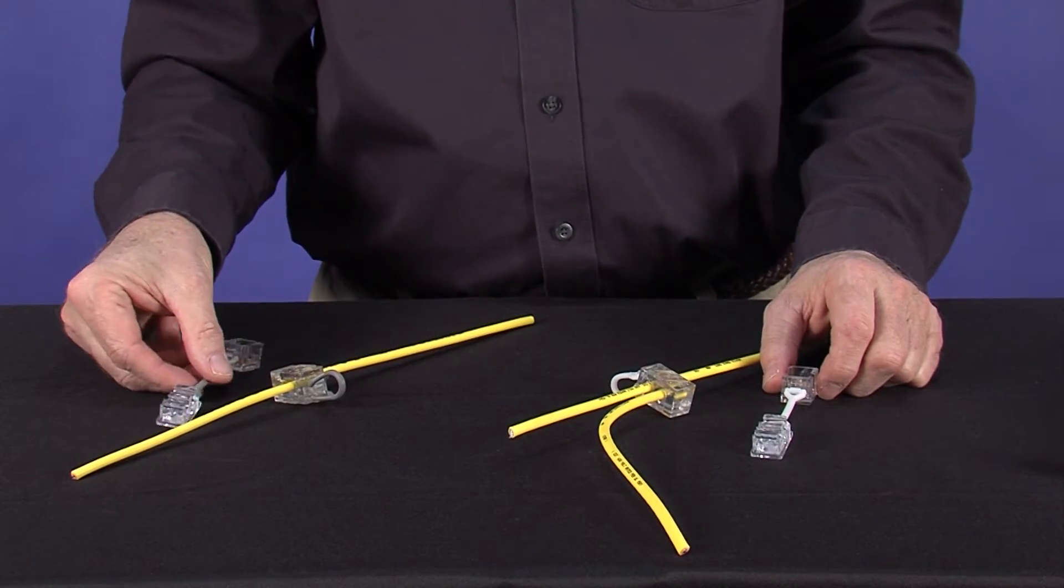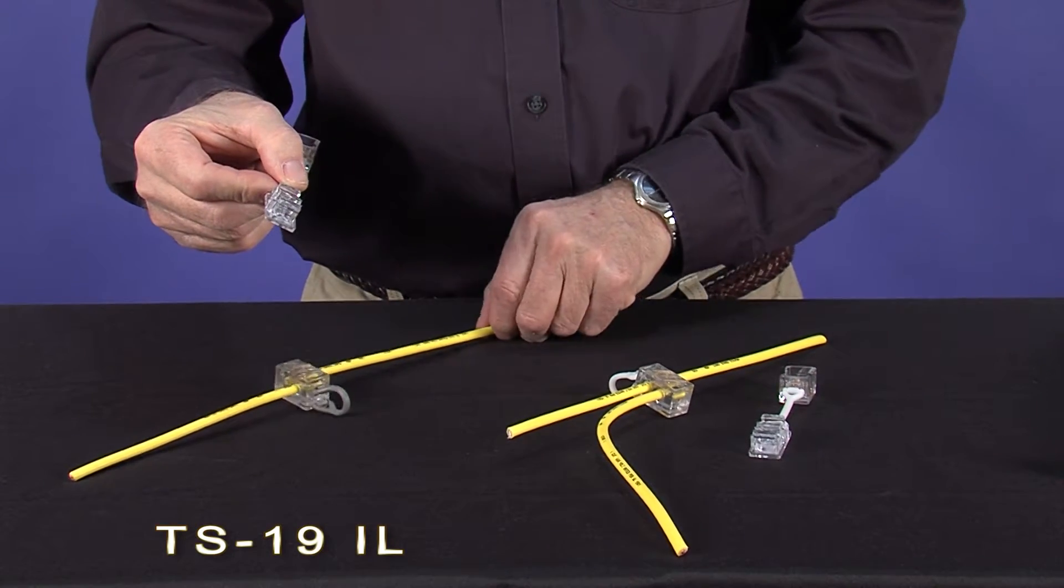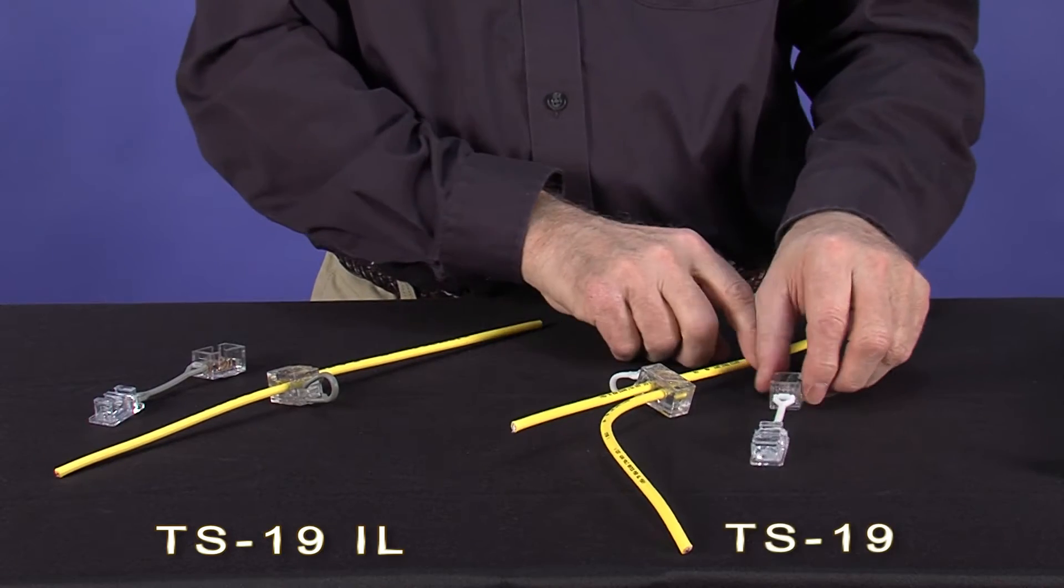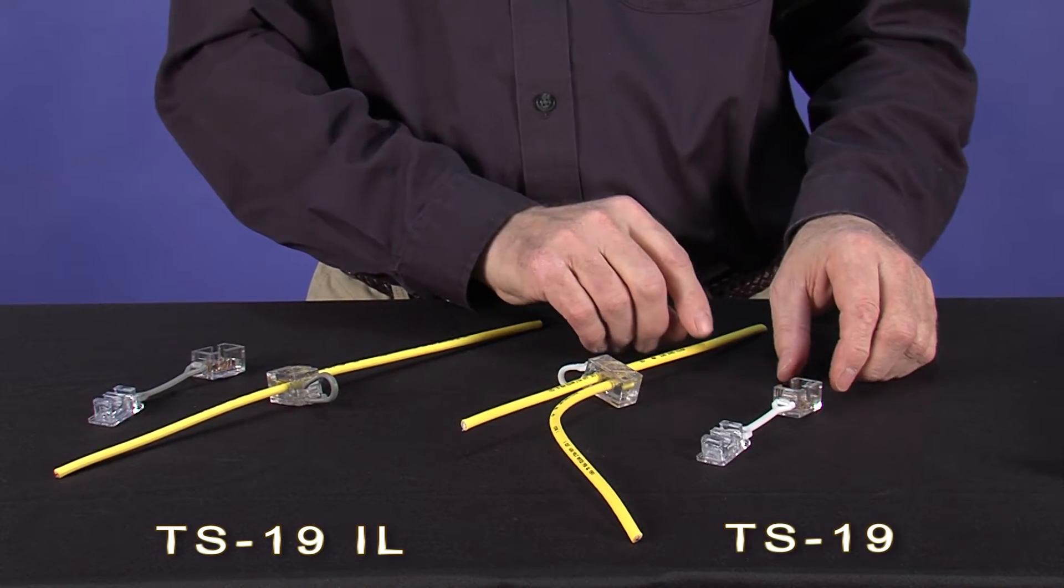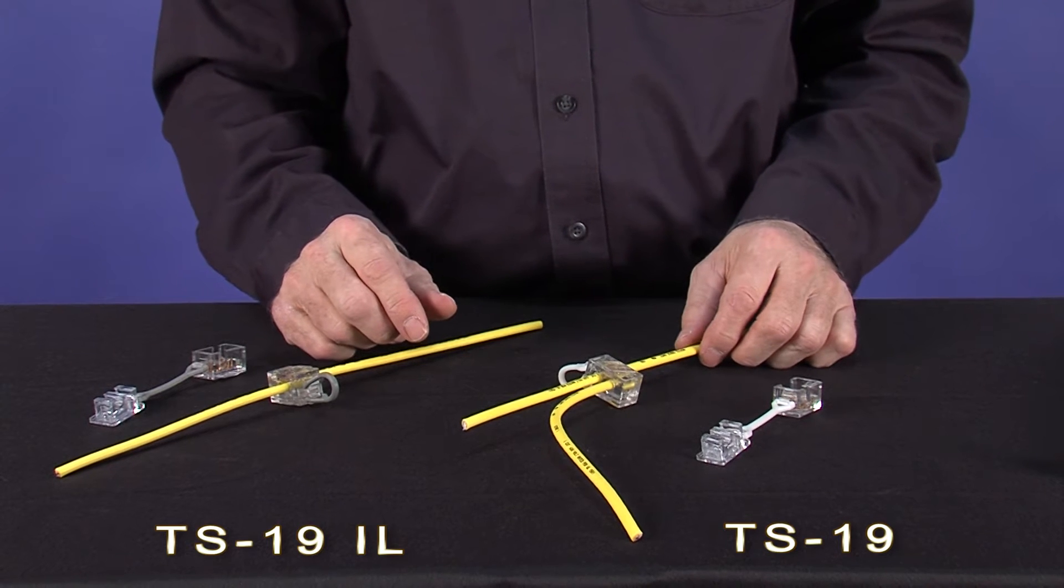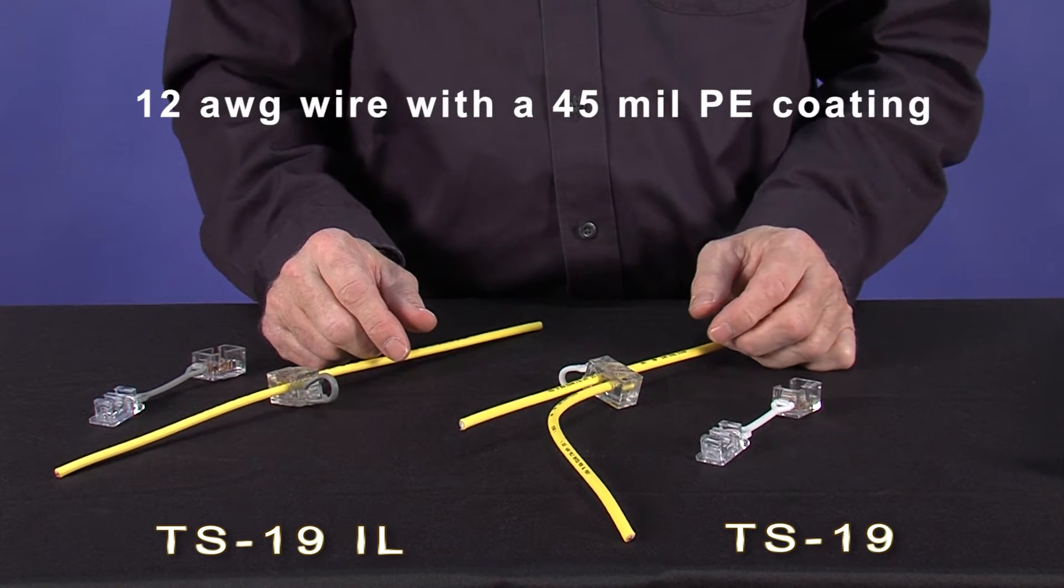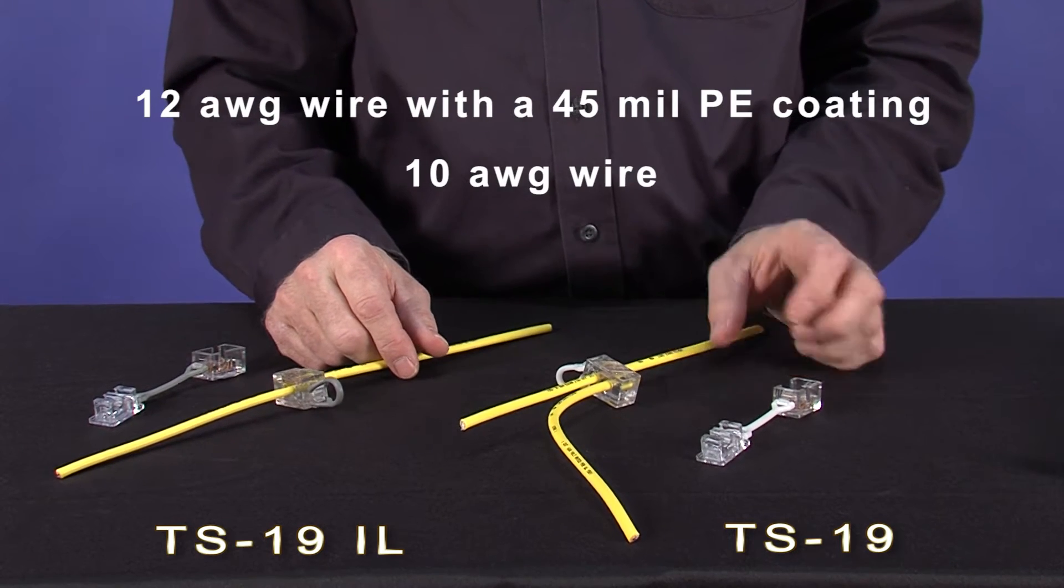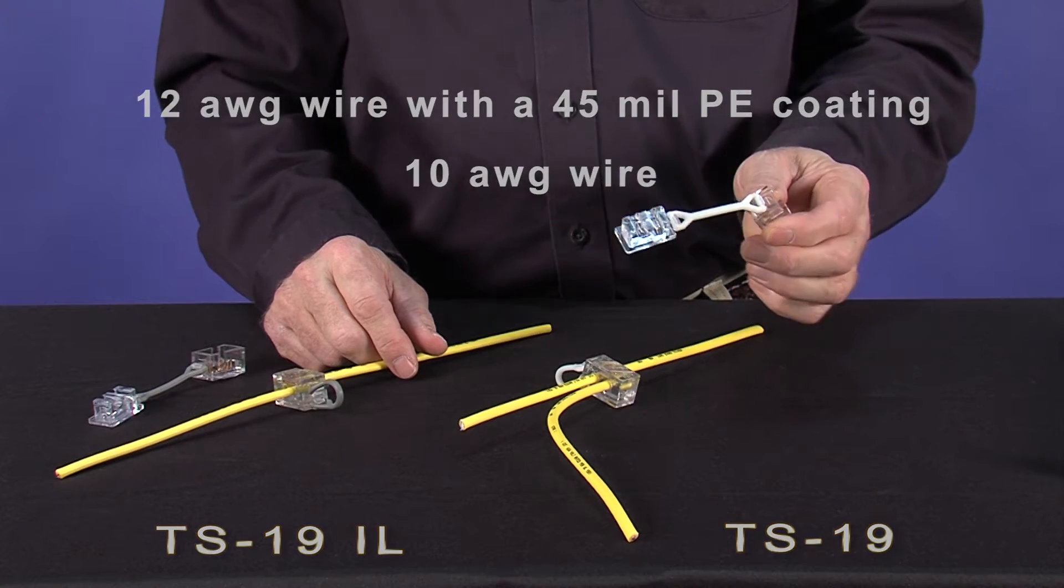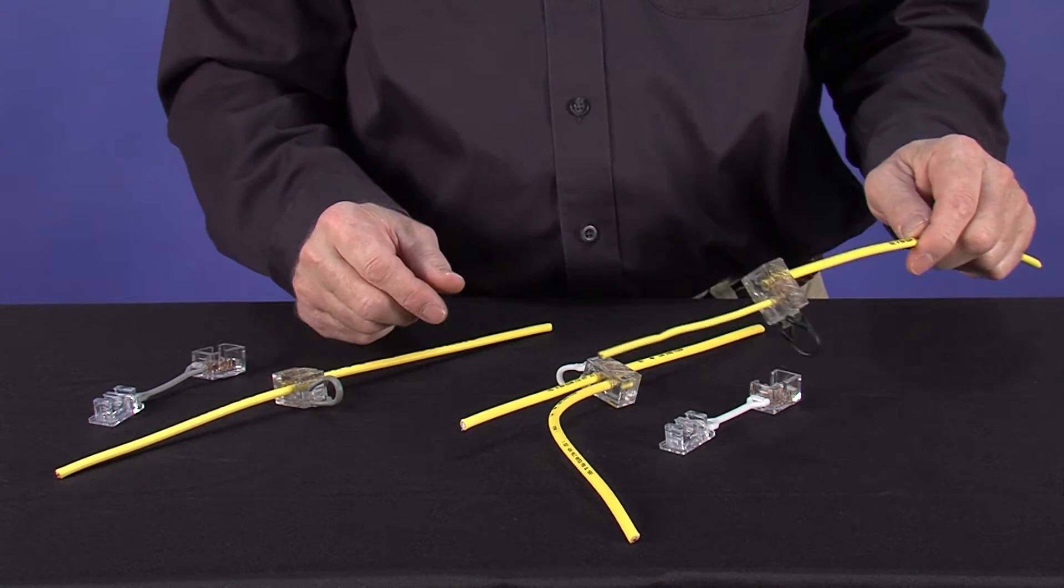Next, I will talk about connectors. The two most popular connectors are TS-19 IL, used to splice two ends, and the TS-19, which is used to add a service lateral onto a main. Although standard connectors are designed to fit TraceSafe, they will also fit some conventional wires. For example, 12-gauge wire with a 45 mil PE coating or 10-gauge wire will both fit standard TraceSafe connectors. We also have a series of connectors for transitioning from existing infrastructure to TraceSafe.